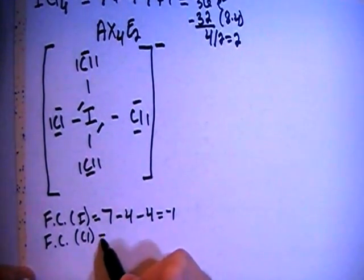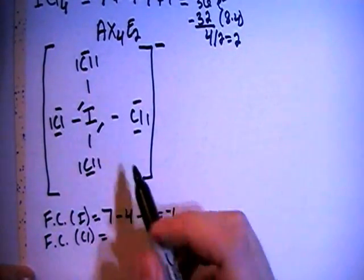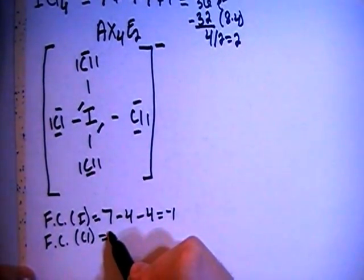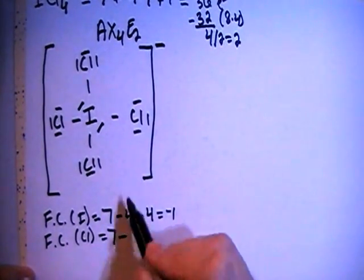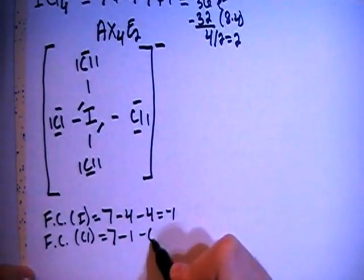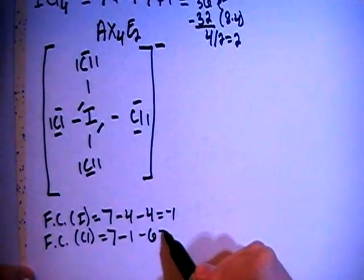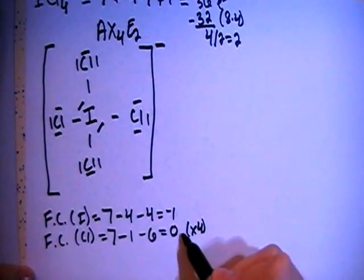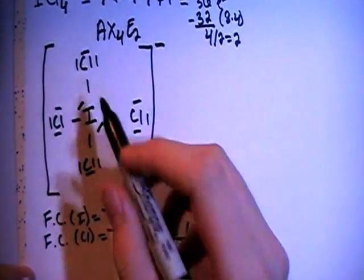And then the formal charges on each of the chlorines, which if you notice they all have the same setup so all their formal charges will be equal. So that's the 7 valence electrons brought in minus 1 single bond on each chlorine minus 2, 4, 6 non-bonding electrons for each chlorine for a formal charge of 0. And we multiply that by 4 because there are 4, 1, 2, 3, 4 of those chlorines.